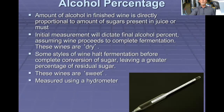For alcohol, we also use a hydrometer to measure the percentage of alcohol in the must at the time of measurement. The amount of alcohol in a finished wine is directly proportional to the amount of sugar present in the juice at the beginning of fermentation. The initial measurement will dictate your final alcohol percent, assuming the wine proceeds to complete fermentation. We call this a dry wine when it is fully fermented — all the sugars are removed from the juice and must and converted into alcohol.